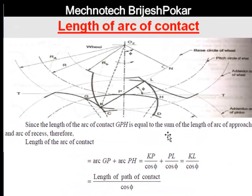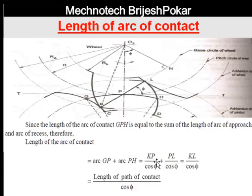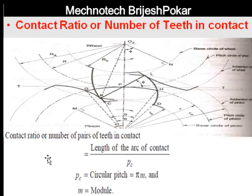Basically, the length of arc of contact is the summation of the length of arc of approach and arc of recess. Arc of approach is GP and arc of recess is PH. So it equals KP upon cos φ plus PL upon cos φ, which equals KL upon cos φ. Therefore, the length of arc of contact equals the length of path of contact upon cos φ.